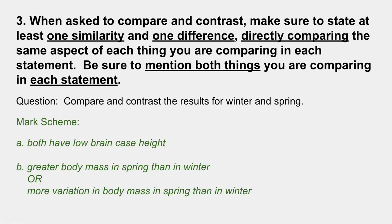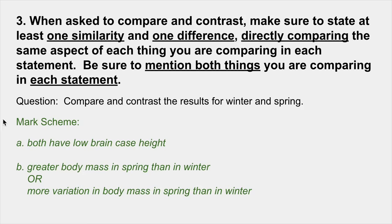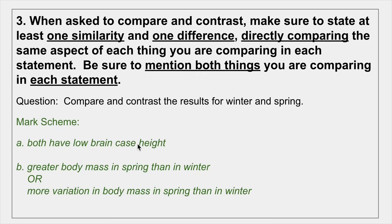Number 3: when asked to compare and contrast, make sure to state at least one similarity and one difference, directly comparing the same aspect of each thing. Be sure to mention both things you are comparing in each statement. For example: 'both winter and spring have low brain case height' as a similarity. For differences: 'there is a greater body mass in spring than in winter' or 'there is more variation in body mass in spring than in winter.' Note both items are mentioned in each statement.